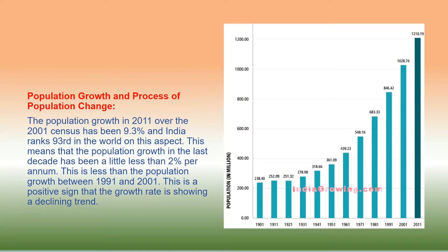Population growth and process of population change: the population growth in 2011 over the 2001 census has been 9.3% and India ranks 93rd in the world on this aspect. This means that the population growth in the last decade has been a little less than 2% per annum, which is less than the population growth between 1991 and 2001. This is a positive sign that the growth rate is showing a declining trend.